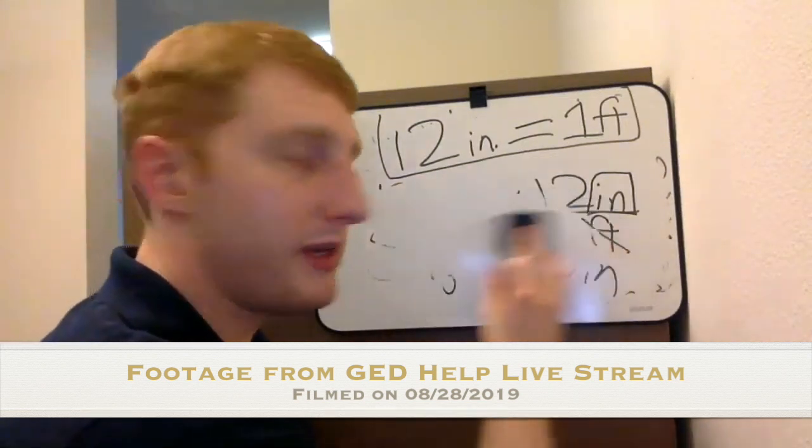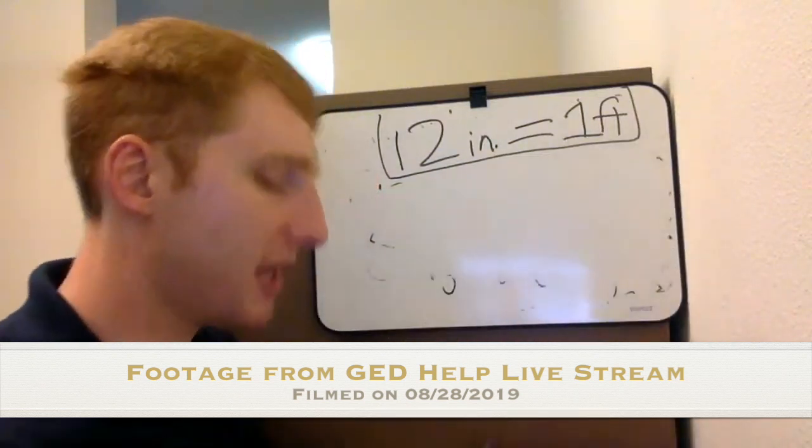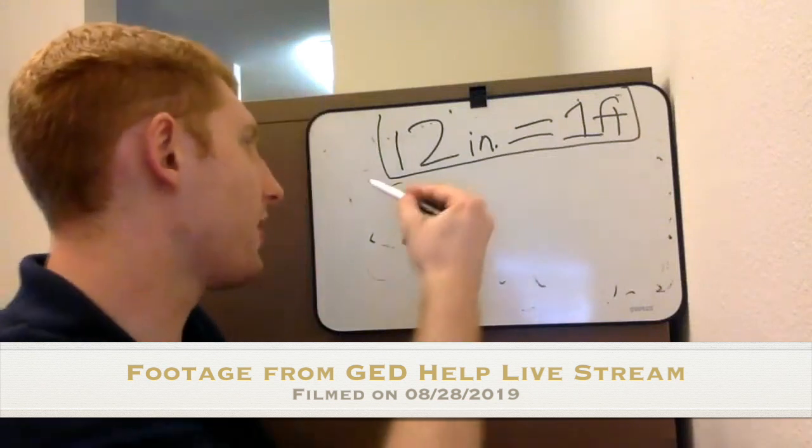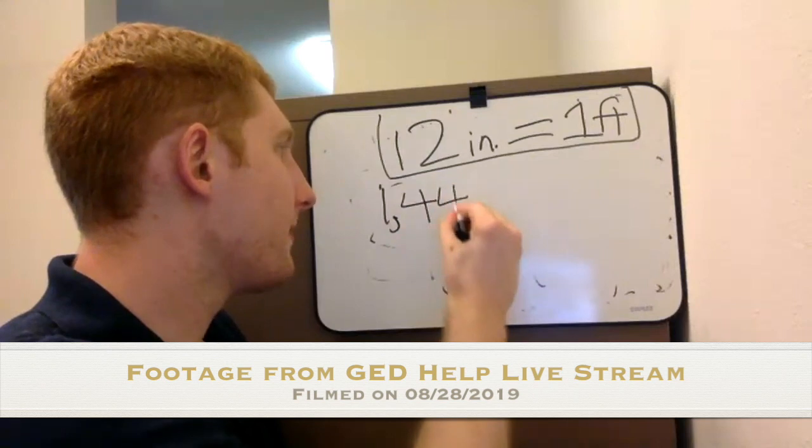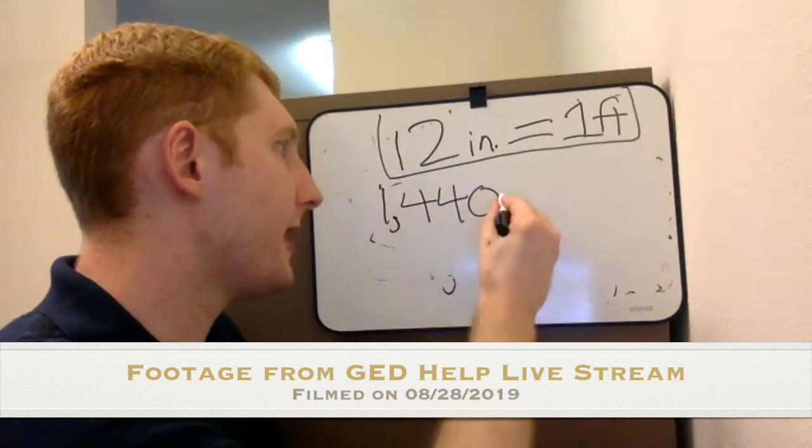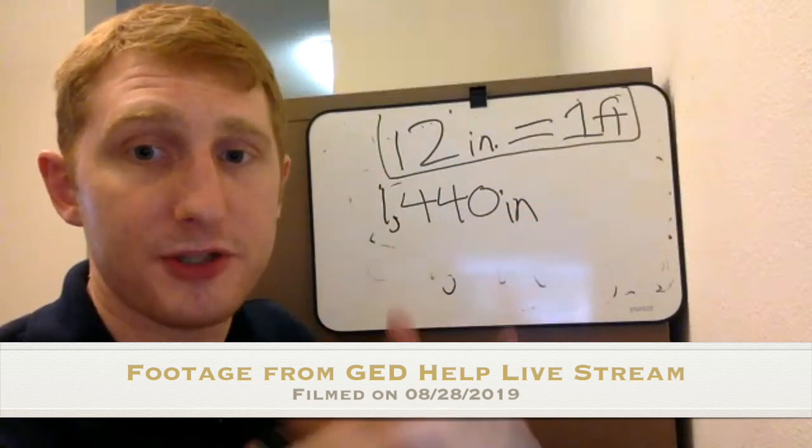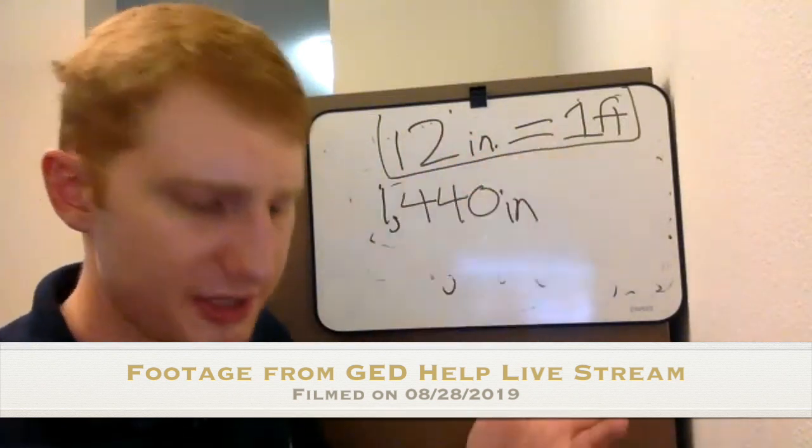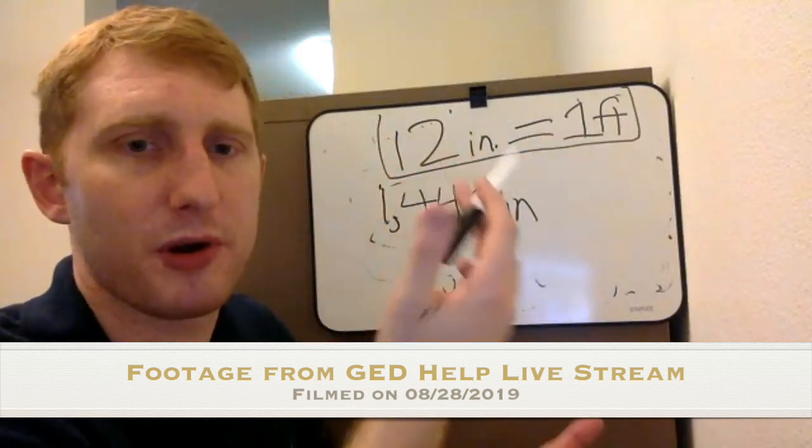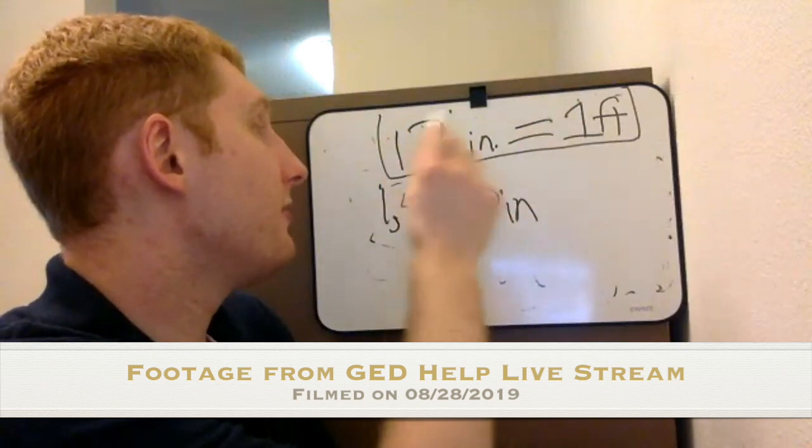So now real quickly, we'll do the other way. Let's say we want to go back. Let's say we've got 1,440 inches. I want to convert this into feet this time. The way that I do it is again, it all goes back to knowing this conversion factor. These should be given to you on the test for the most part, but this is an easy one to remember. 12 inches per one foot.